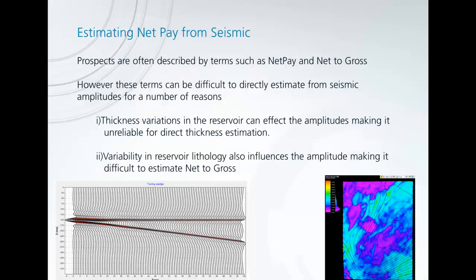Prospects are often described by terms such as net pay and net-to-gross, but the difficulty can be to directly estimate this from seismic for a number of reasons. This can firstly be due to thickness variations in the reservoir which can affect the amplitudes, making them unreliable for a direct thickness estimation, and secondly, variability in the reservoir lithology is also changing the amplitude, making it difficult to estimate net-to-gross.